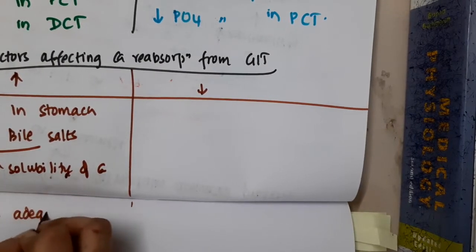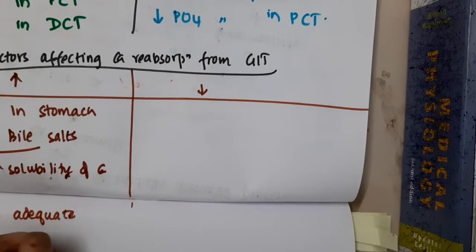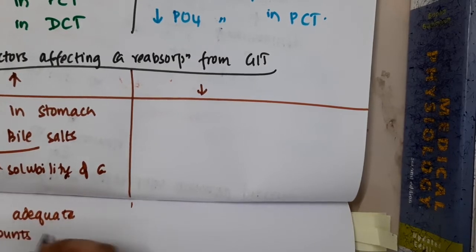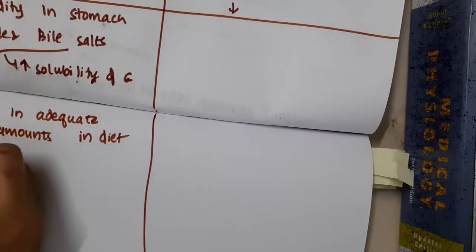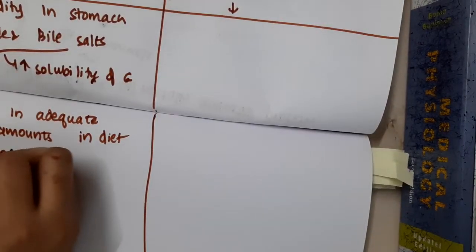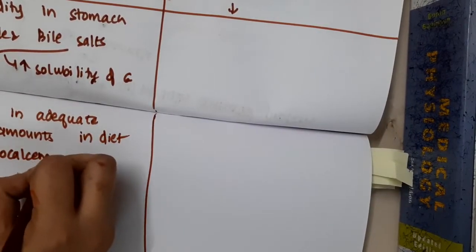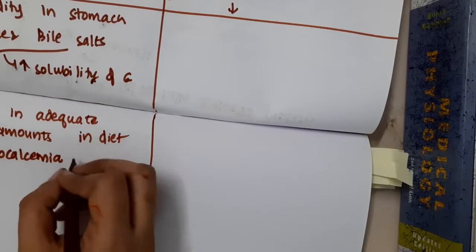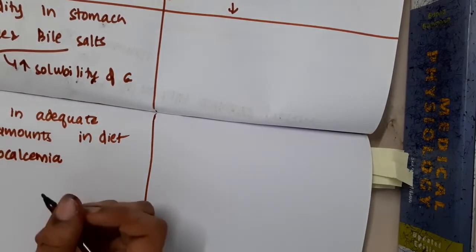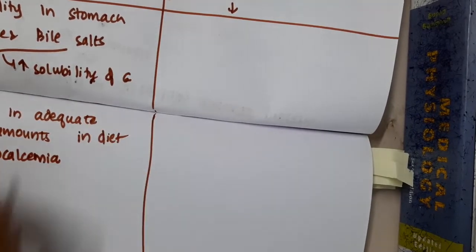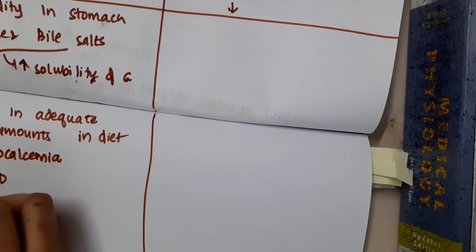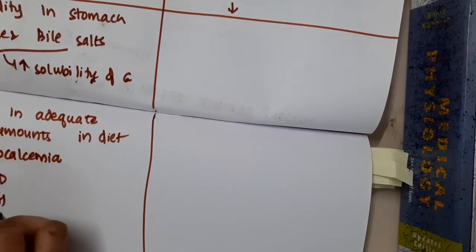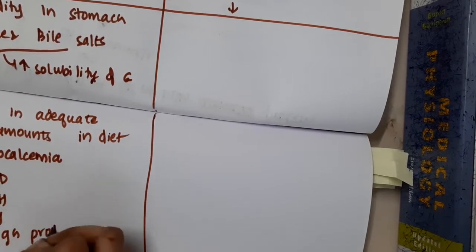Third, presence of phosphate in adequate amounts in the diet. Fourth, hypocalcemia — hypocalcemia will obviously increase calcium reabsorption. Fifth, Vitamin D increases calcium reabsorption. Sixth, parathormone, and seventh, growth hormone also increase calcium reabsorption.